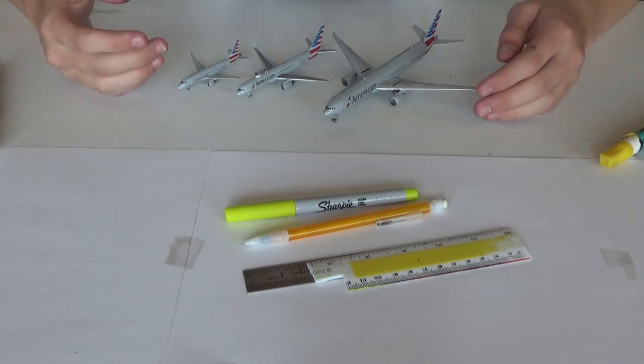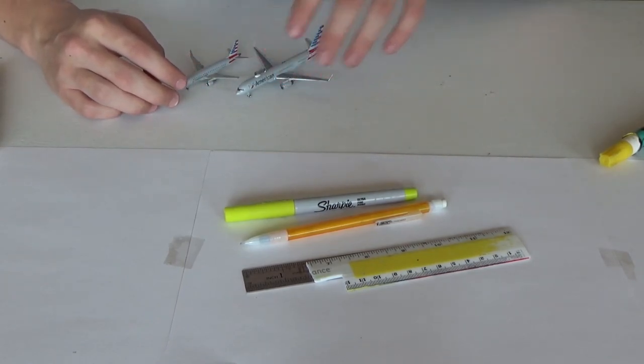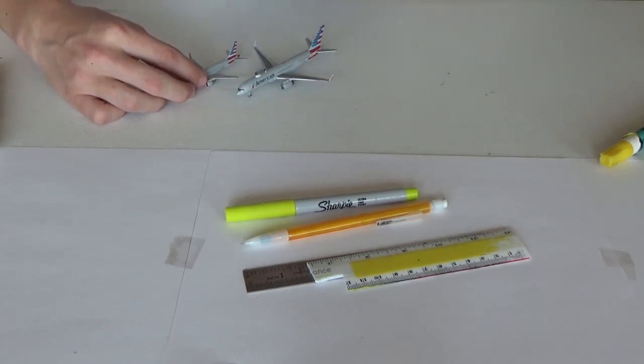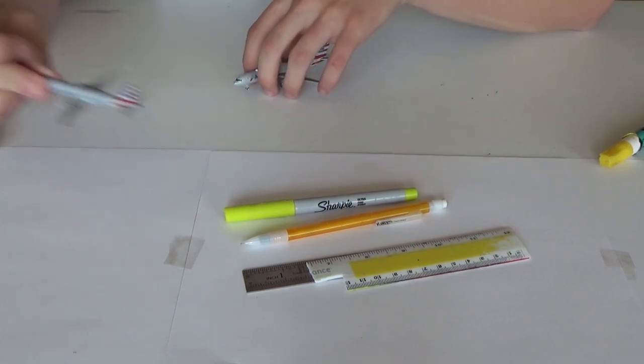And then you're going to need three aircraft. I would recommend the triple seven. Well, any heavy works, but for what I have, it's a 777 because that's the biggest plane I have. 757 and the E 175 for sure. You're going to need those too. So let's start with 757.